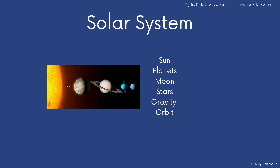You're expected to know the order of the planets. So on that image there, you've got the sun, followed by Mercury, then Venus, Earth, Mars, Jupiter. Then the first one with the rings around it is Saturn. Then you've also got Uranus, and the last one is Neptune. It's important you know those, and there are many rhymes out there that you can learn to remember them.